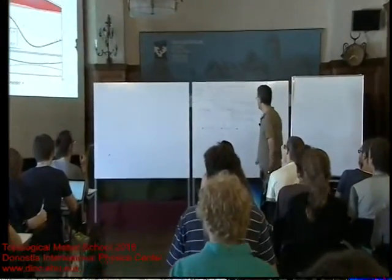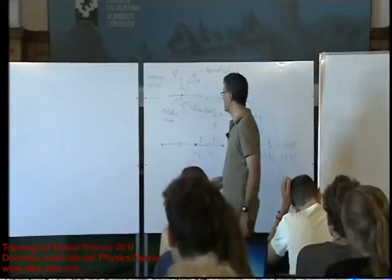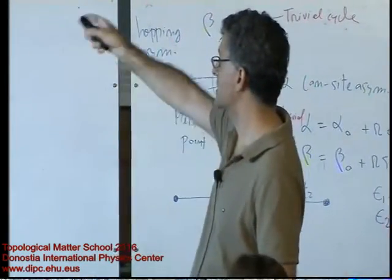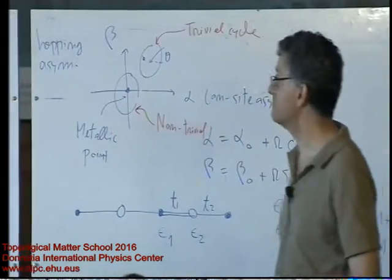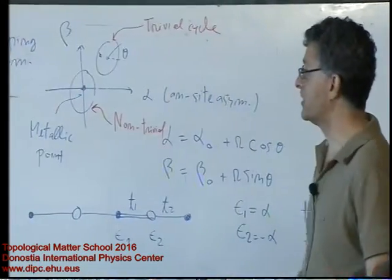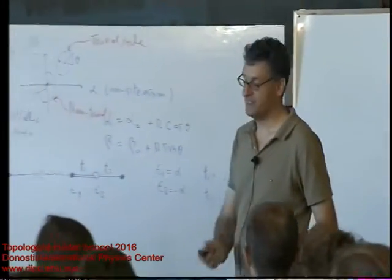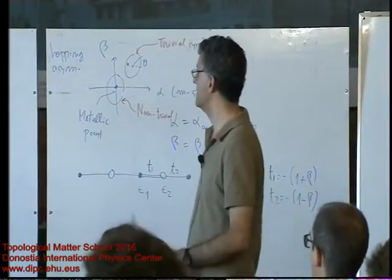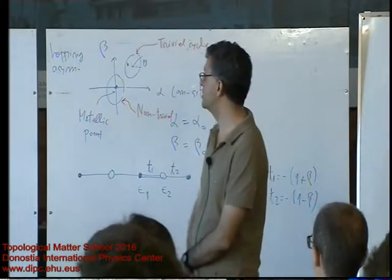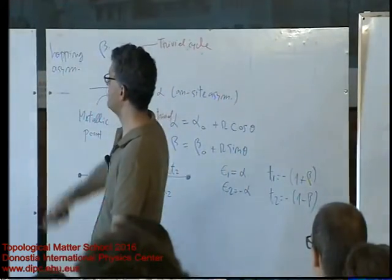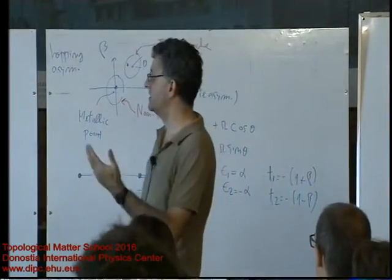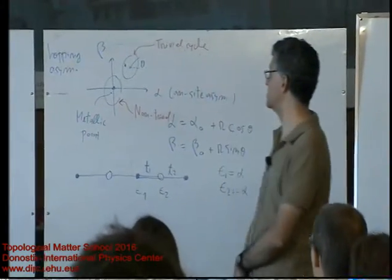We've been studying this staggered, dimerized model, and we've considered in particular two cycles. This one here, which I call trivial, where all the quantities come back to themselves when the system returns to the initial state. And then the second cycle, where the bulk polarization is changing continuously, so charge flowing through the bulk changes by a quantum, and then since the system as a whole came back to itself, that means there has to be some surface states crossing on the two edges, to allow for the charge to tunnel from one end to the other, so that the surface charge is also a periodic function.